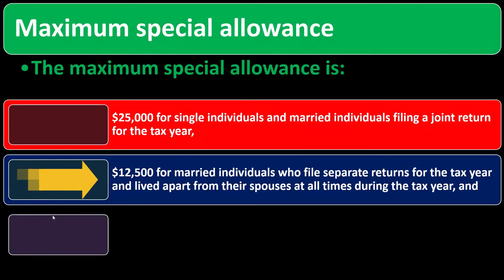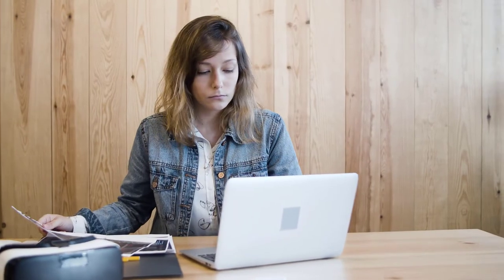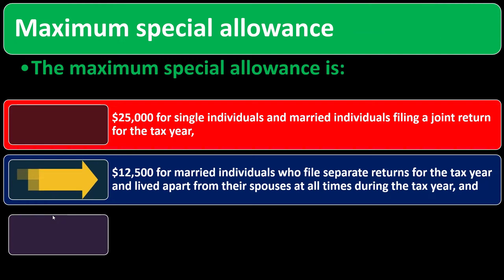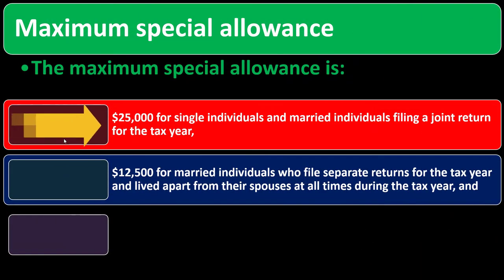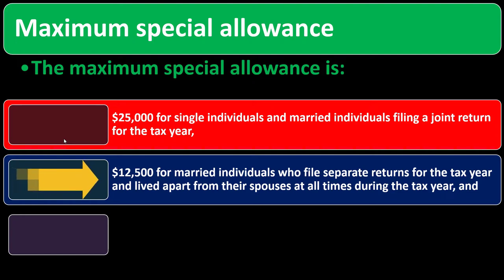Remember that with regards to the filing statuses, if not married, you might be single or head of household filing status. If married, you typically would be filing married filing jointly unless you opted to file married filing separately. You generally can't go back to single or head of household if you're legally married, unless a divorce or separation applies. So once again, it's $25,000 for single and married filing jointly, and $12,500 for married filing separately who lived apart all year.